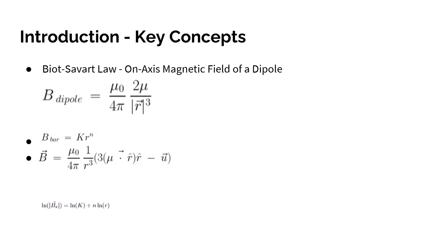Here are some of the key concepts we're going to be using in today's lab. We have the magnetic field of a dipole moment on-axis — that's the first equation. The next equations were provided to us for the determination of the dipole moment. The third equation is the total magnetic dipole moment of our magnet, which we'll use to create our computational model. The last one is a linearization of our data, which will be used later.